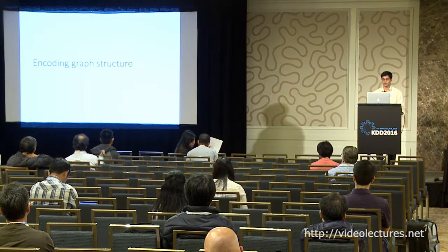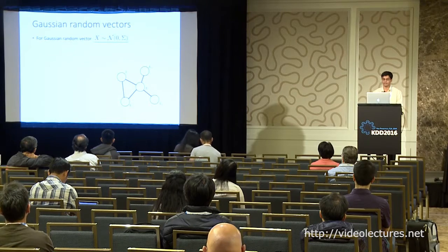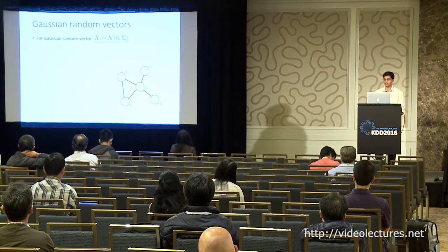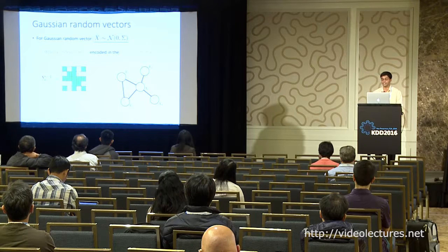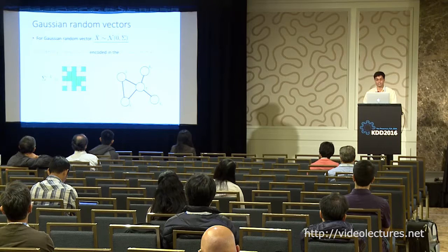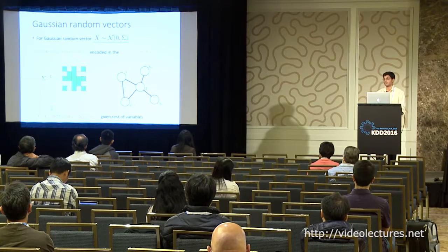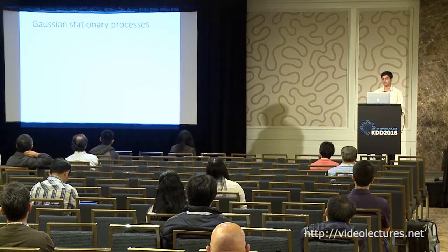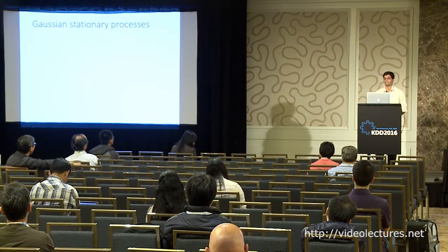I want to start with how graph structure is encoded in the data. In the case of independent and identically distributed Gaussian random vectors, conditional independence relationships are encoded in what's called the precision or inverse covariance matrix, which describes the distribution of the data. Specifically, a value of zero in the (i,j) entry of the inverse covariance matrix indicates that components i and j of our multivariate Gaussian are conditionally independent given the remaining components.